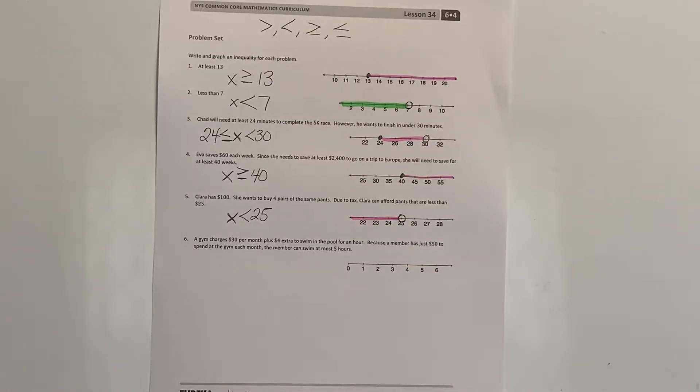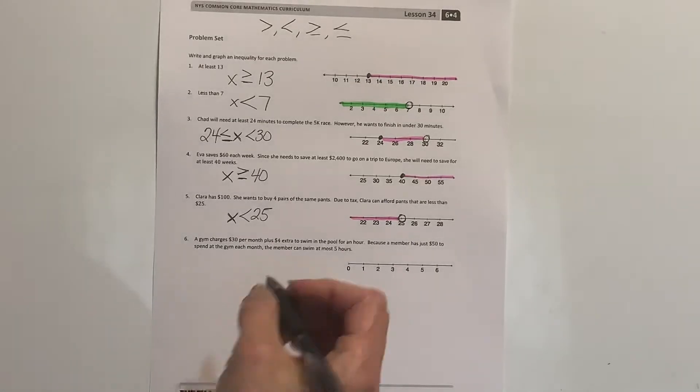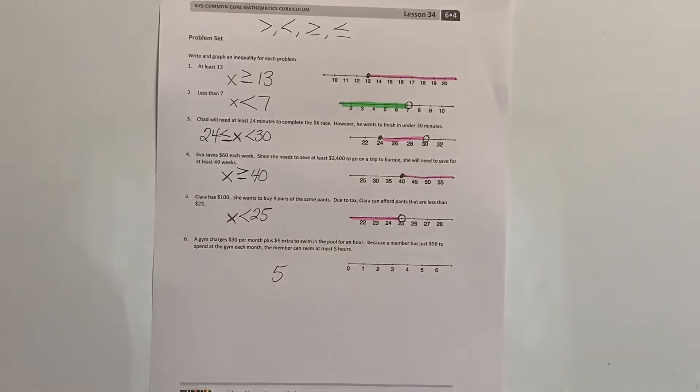Well, that makes sense because we've got $30 for the month, we've got $4 extra, and so for five hours, five times four is $20, so then that would get to the $50 and that's all they have to spend. So that makes sense.